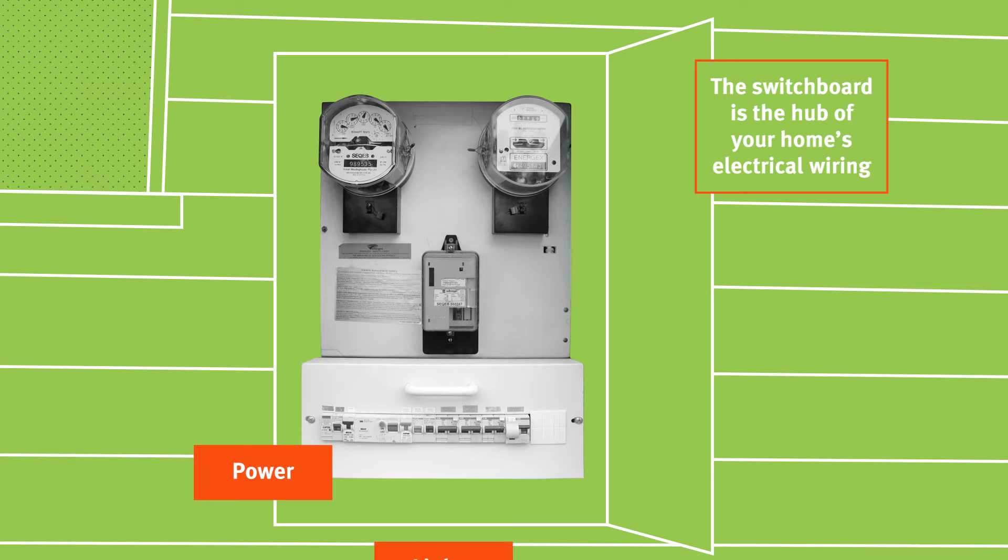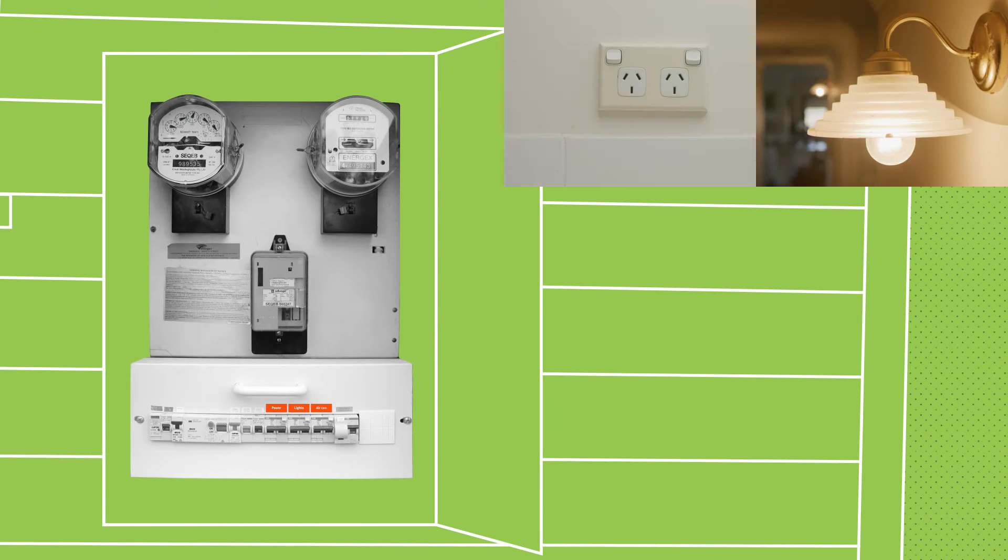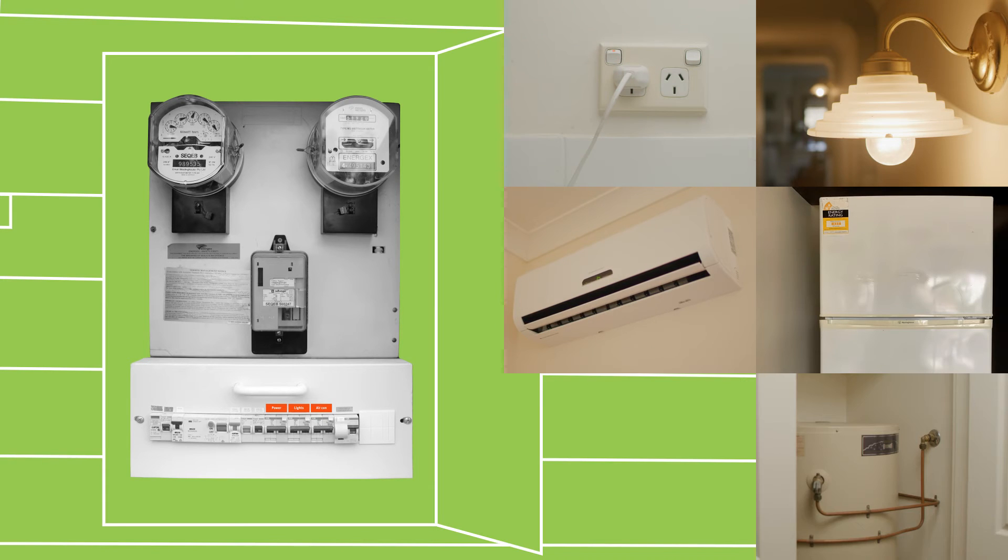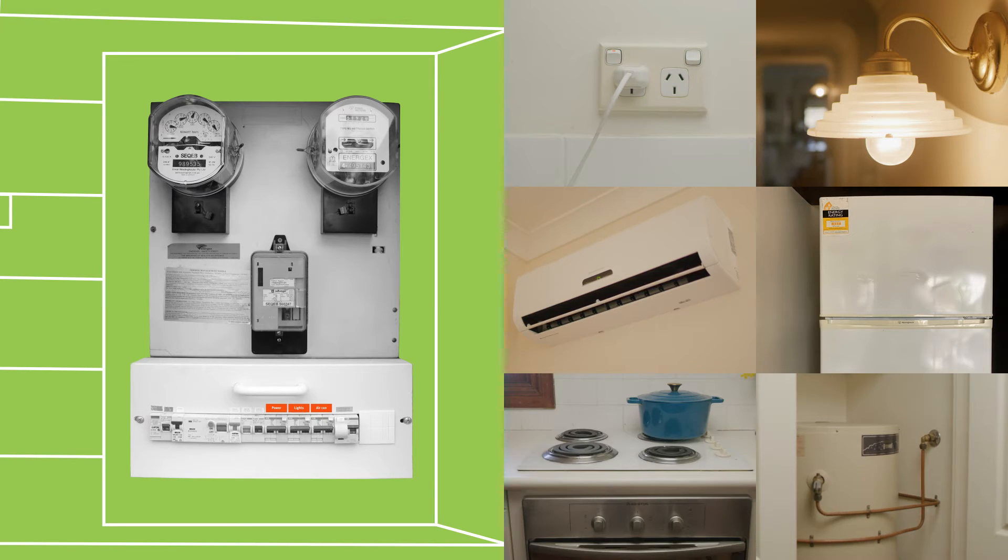A switchboard splits electricity across different circuits, providing power to lights, power points and hardwired equipment like air conditioning, refrigerators, hot water systems, ovens and cooktops.